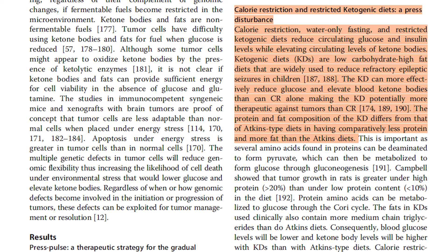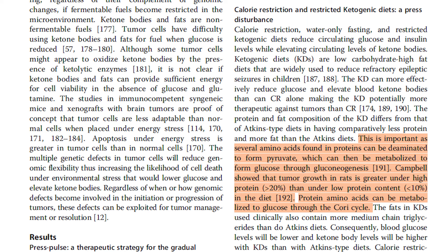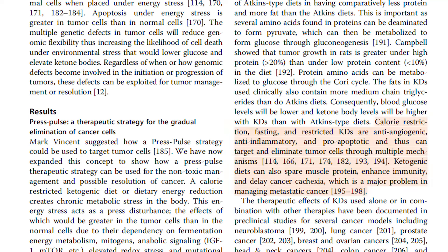The protein and fat composition of the ketogenic diet differs from that of Atkins-type diets in having comparatively less protein and more fat. This is important as several amino acids found in proteins can be deaminated to form pyruvate, which can then be metabolized to form glucose through gluconeogenesis. Campbell showed that tumor growth in rats is greater under high protein (above 20%) than under low protein content (below 10%) in the diet. Calorie restriction, fasting, and restricted ketogenic diets are anti-angiogenic, anti-inflammatory and pro-apoptotic, and thus can target and eliminate tumor cells through multiple mechanisms. Ketogenic diets can also spare muscle protein, enhance immunity, and delay cancer cachexia.